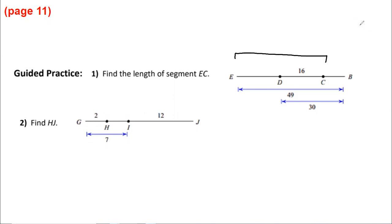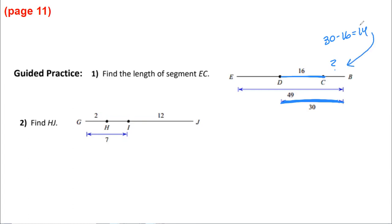EC is this segment — we want to find its length. First we need to find all the little side lengths. DB is 30, and DC is 16, so what would the missing part be? Take the big part minus the small part: 30 minus 16 gets you 14. That's the tiny bit right there, because 16 and 14 makes 30.